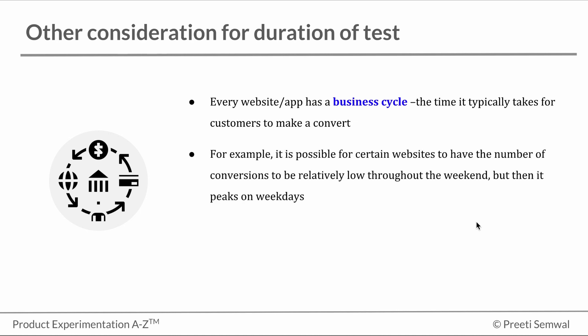For example, it is possible for certain websites to have the number of conversions to be relatively low throughout the weekend, but then it peaks on weekdays. So if you run a test on Saturday and Sunday, the results are bound to be different from the results you get from running the test on Monday and Tuesday.